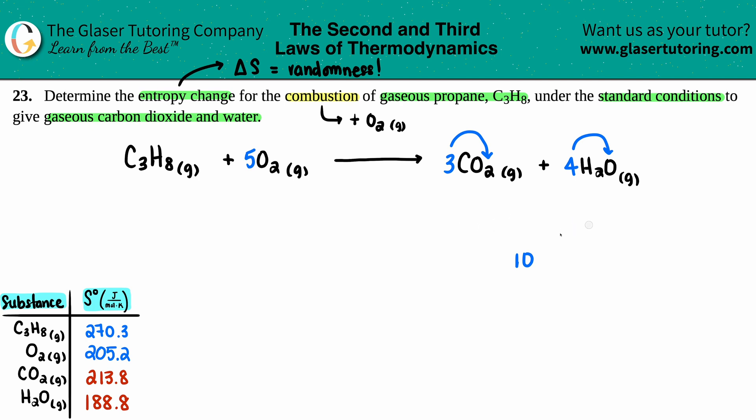The next thing is, since we're dealing with finding out entropy changes, delta S values, and they told us that we're under standard conditions, this means that we're going to use the standard values in the back of a textbook. So we're technically finding out a delta S notch. This notch, this little degree sign up here, just represents that we're dealing with standard values. And those standard values are going to be found in the back of the textbook. So that's what I did, I went to the back of the textbook to find out what these four substances' delta S values are.